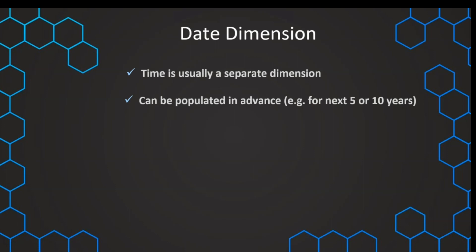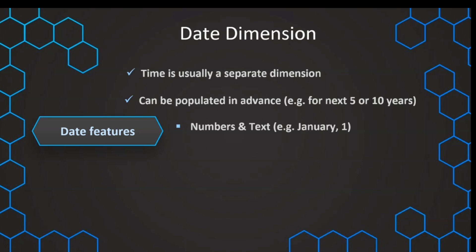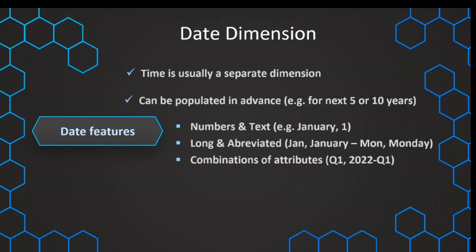The date dimension is one of the few dimensions that is very predictable and calculatable, so we can pre-populate it in advance, including for future dates that don't yet exist in the fact table. When creating the date dimension, we should include both numbers and text — for example, January as the month name and 1 as the month number.